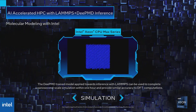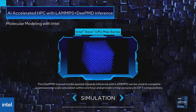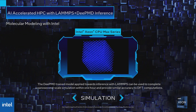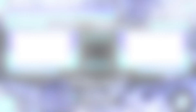The DeepMD trained model, applied to inference with LAMMPS, can complete a nanosecond scale simulation within 1 hour and provide similar accuracy to DFT computations. This represents a speedup of up to 135 times over some of the most accurate MD potential models commonly used today.